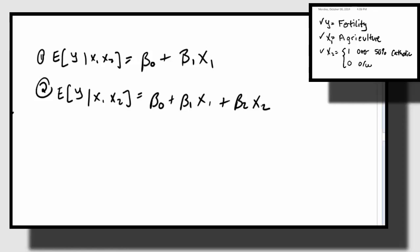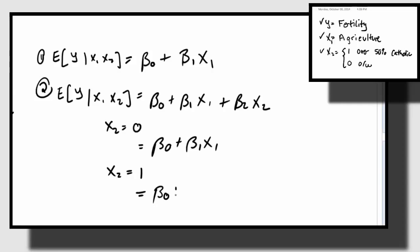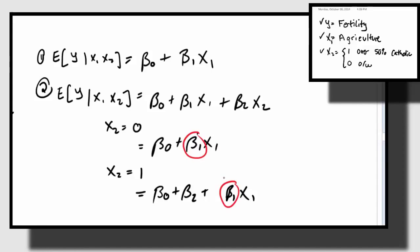Let's consider a second model. The expected value of Y given X1 and X2 is beta-naught plus beta-1 X1 plus beta-2 X2. In the event that X2 is zero — the province is majority Protestant — this works out to be beta-naught plus beta-1 X1. In the event that X2 is one — the province is majority Catholic — this works out to be (beta-naught + beta-2) plus beta-1 X1. So fitting this model with X1 and X2 but no interaction fits two lines that have the same slope but different intercepts — beta-naught and beta-naught plus beta-2 for the second intercept.